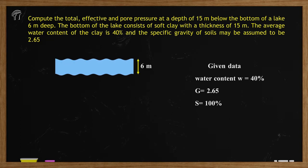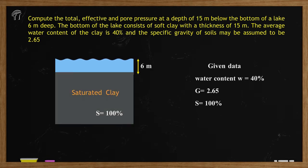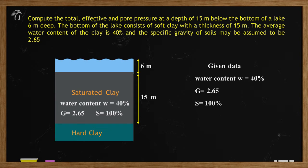We have a lake 6 meters deep. Below this lake we have 100% saturated clay with a water content of 40% and specific gravity of 2.65. The depth of this saturated clay is 15 meters. Below this clay layer there is one more layer of hard clay, but we have been asked to determine effective stress 15 meters below the bottom of the lake, so this hard clay layer is irrelevant and we will not consider it in our calculation.